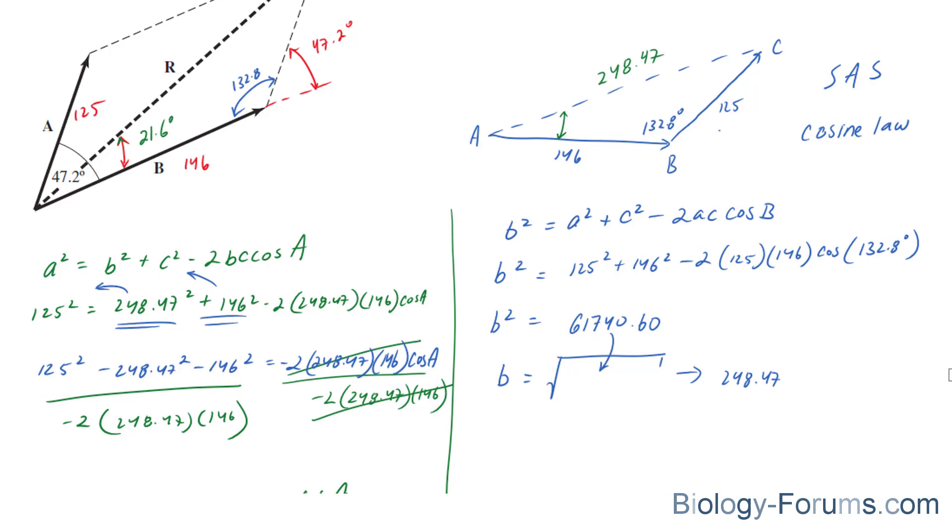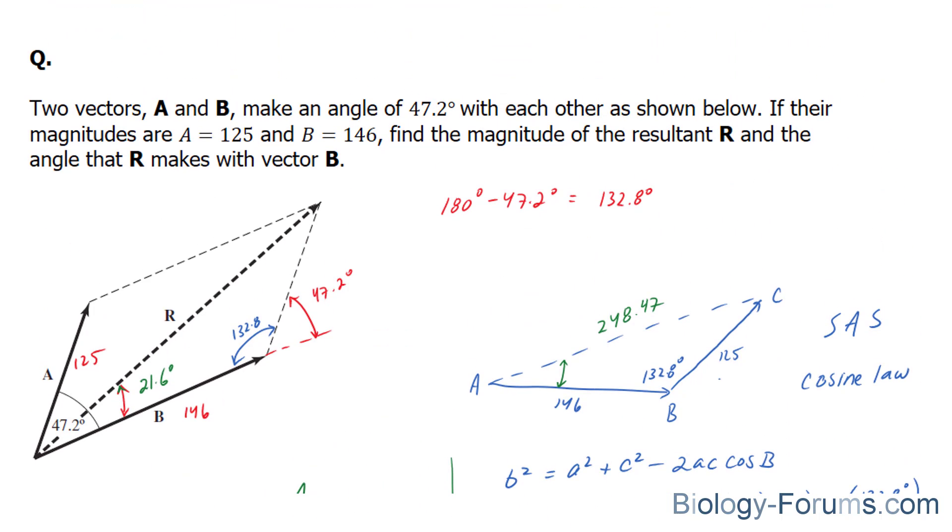So, there you have it. That is how to find the resultant vector of two vectors that are separated by an angle. If you found this tutorial helpful, please support our channel by subscribing or by liking this video. If you have any further questions, you may visit our website at biology-forums.com. We are an online service for students seeking free homework help. See you soon.